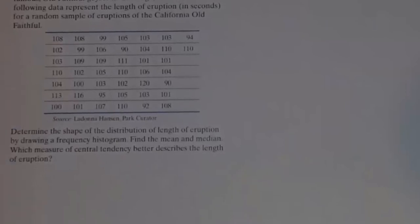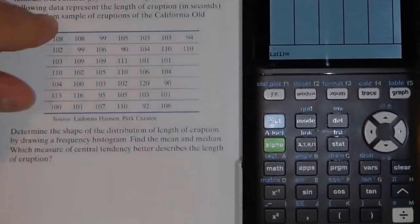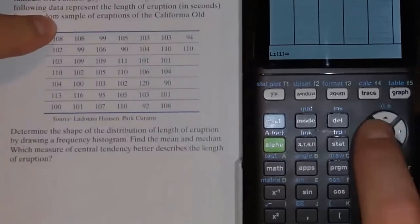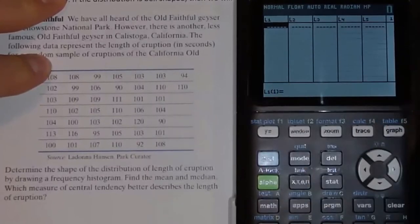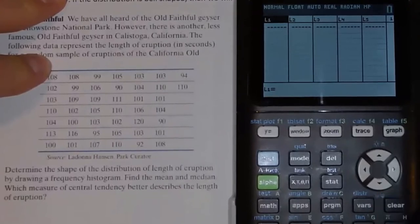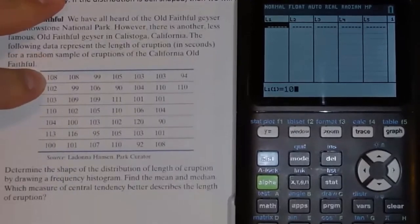I'm going to show you how to use technology to calculate the mean and the median — both the calculator and StatCrunch. I didn't enter this data into my calculator before class, so bear with me while I type these data values in. I'll go to Stat and Edit to get to the lists, clear the data out of L1 by highlighting it and pressing clear then enter, and type the data in.